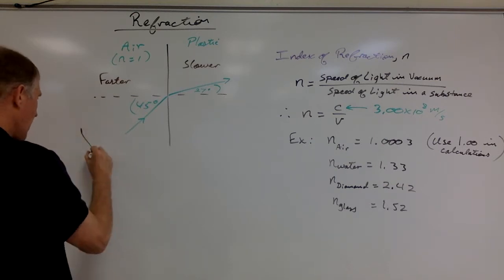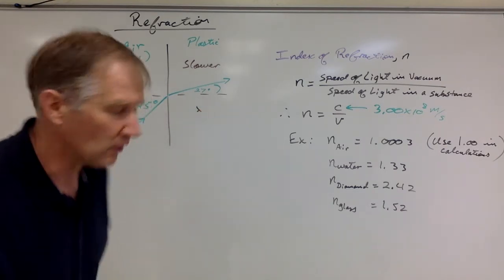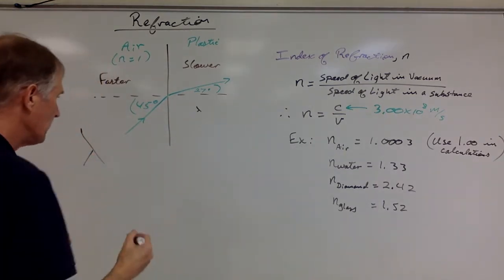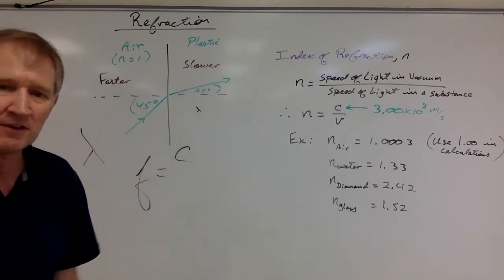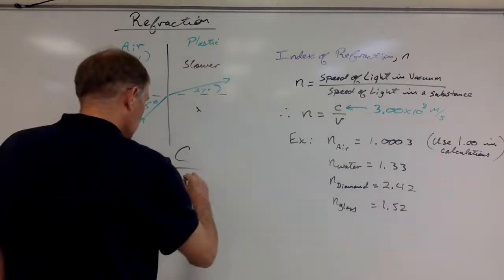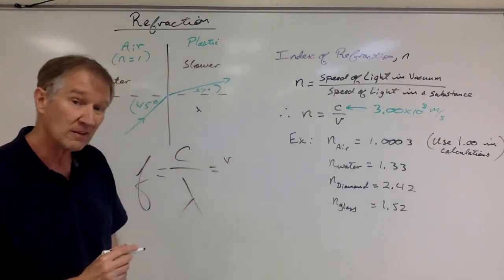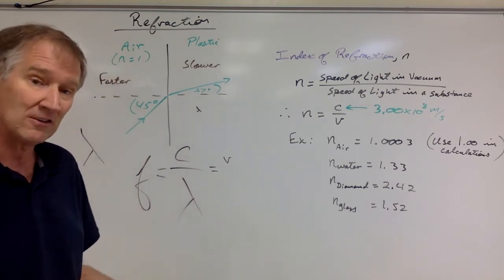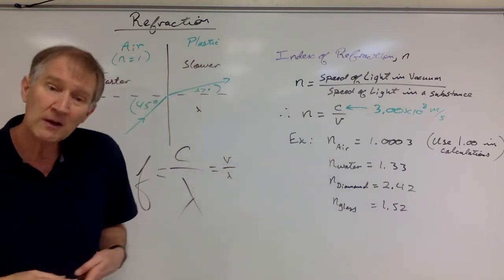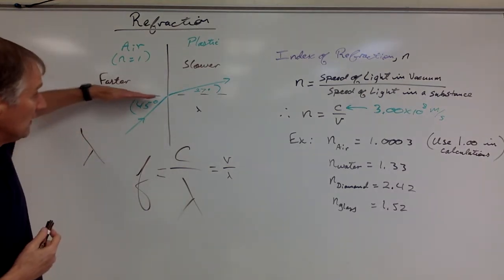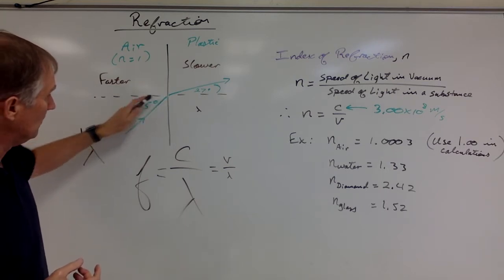When light is going faster in less dense air the wavelengths are longer; in more dense plastic the wavelengths are shorter — they bunch up when going slower. Importantly, the frequency of the light doesn't change. In a vacuum the waves are spread out at maximum speed, and in something dense like diamond they bunch up, but the frequency stays the same. You only get bending if the light hits the boundary at an angle.